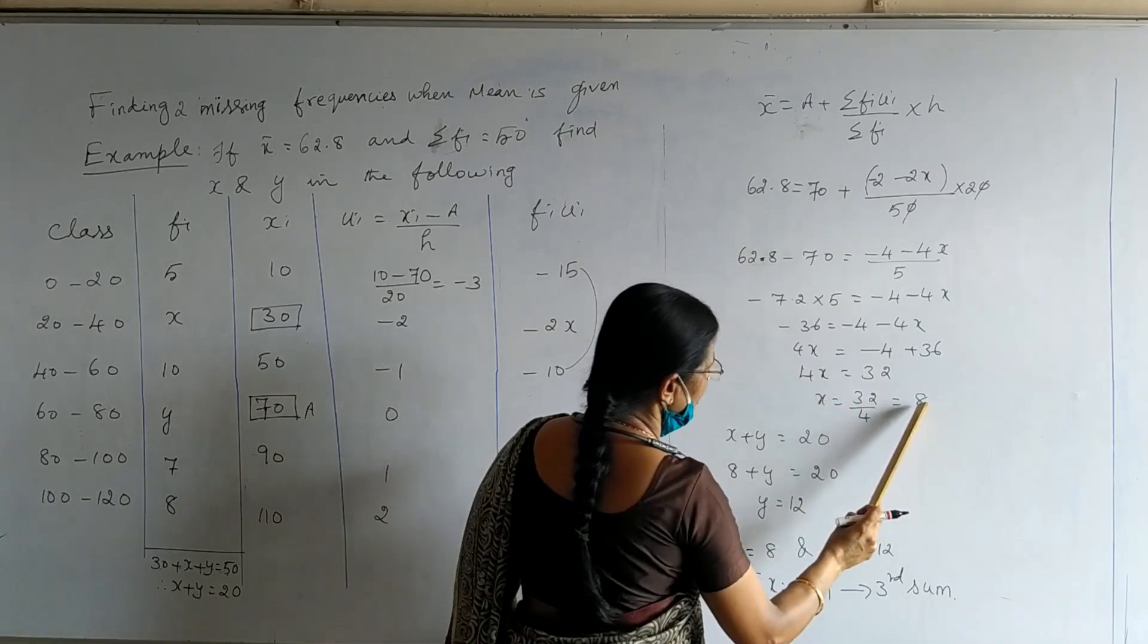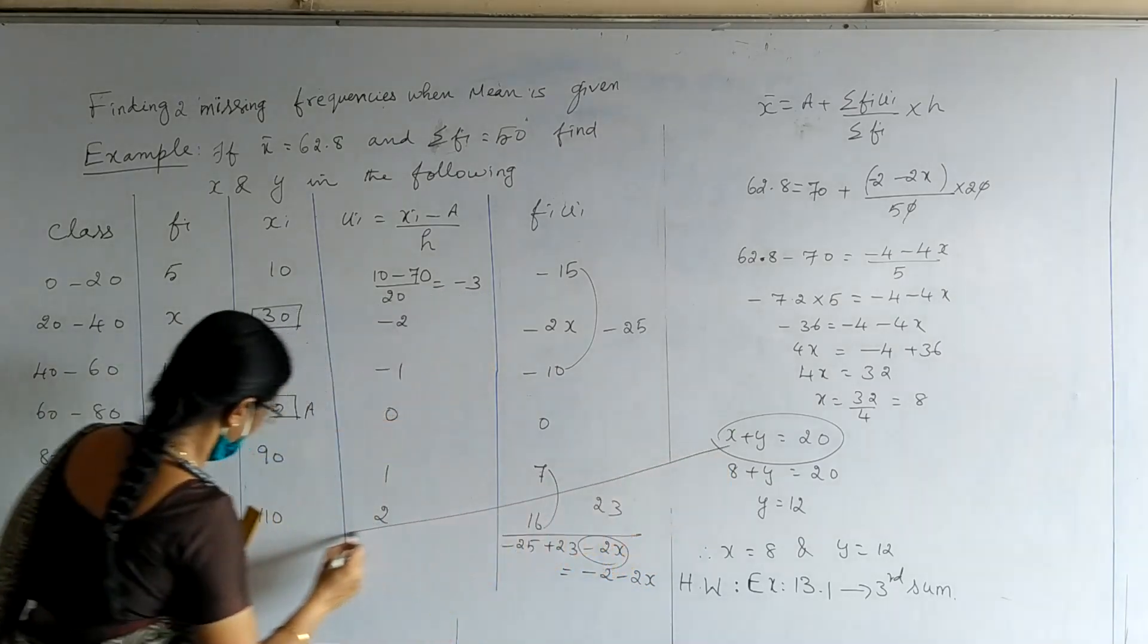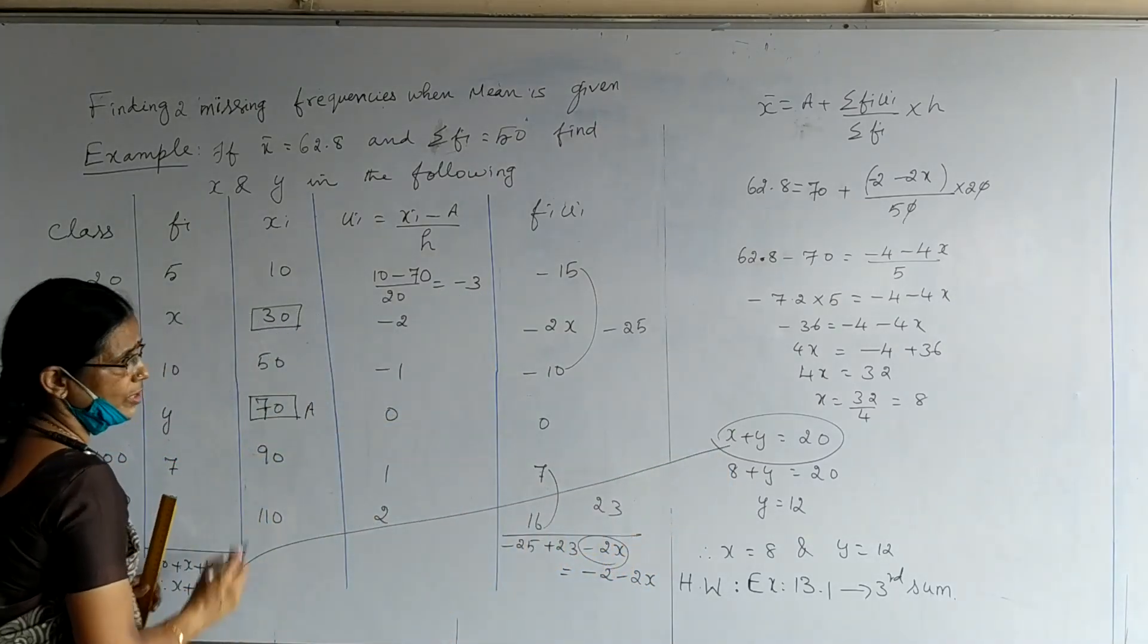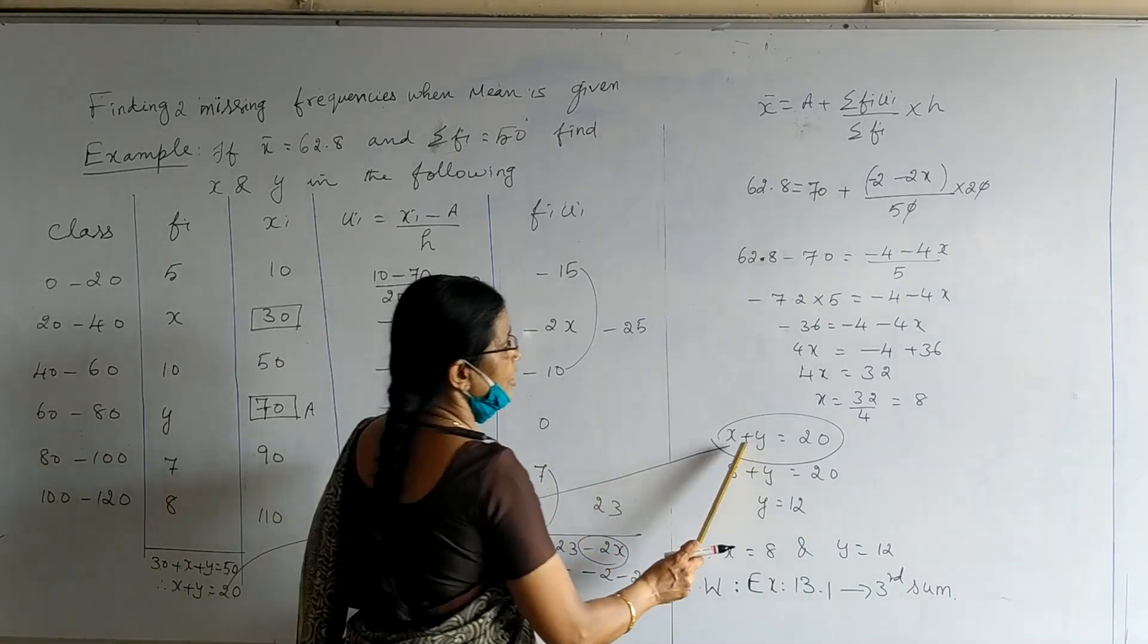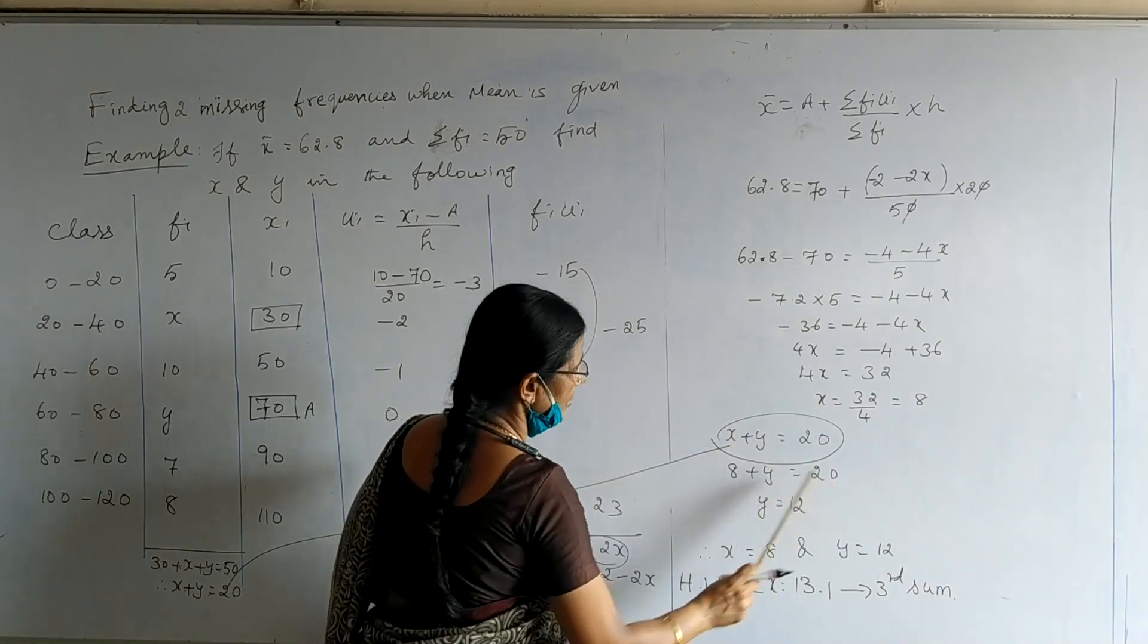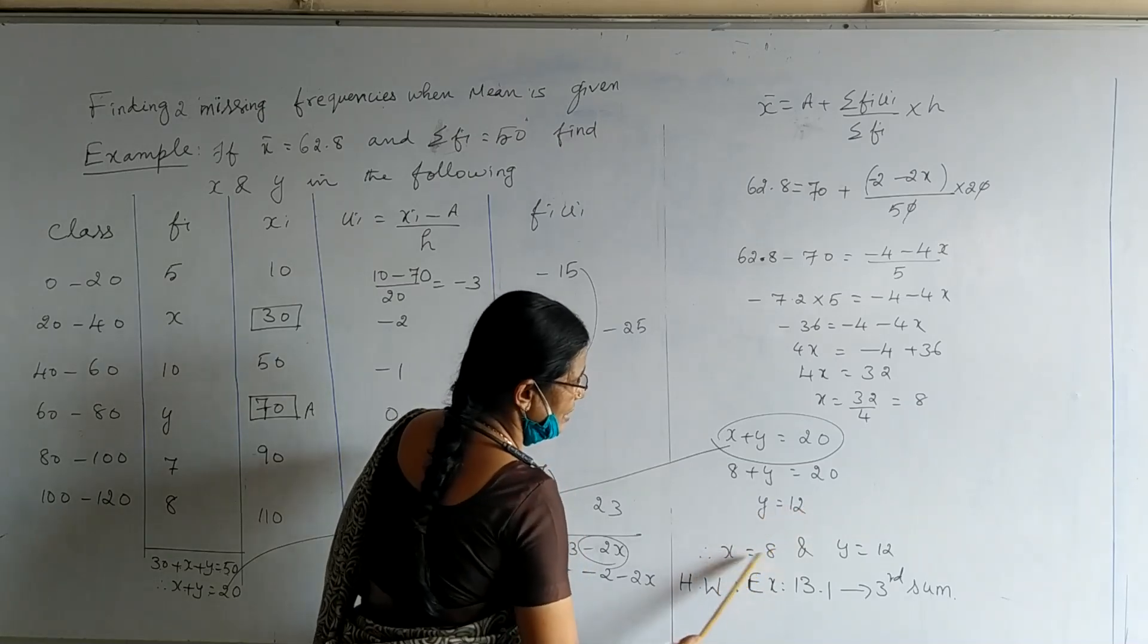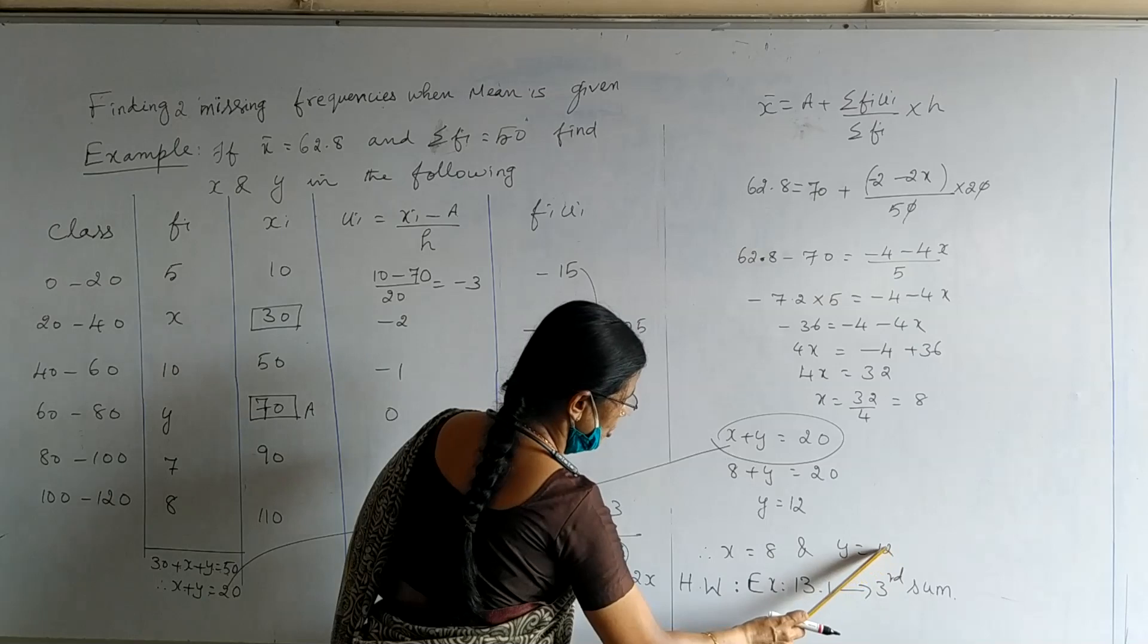x plus y equal to 20 is copied from this column. Substituting the value of x as 8, plus y is 20. Therefore, y becomes 12. Therefore, the missing frequencies are x is equal to 8, and y is equal to 12.